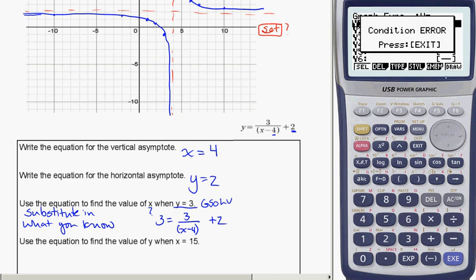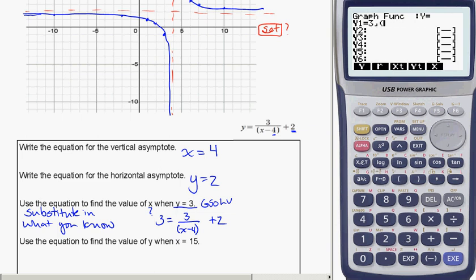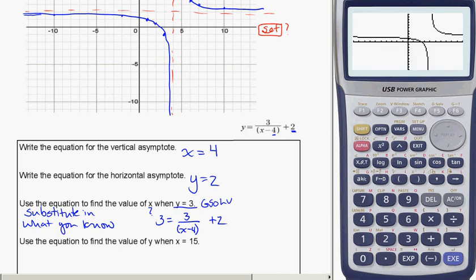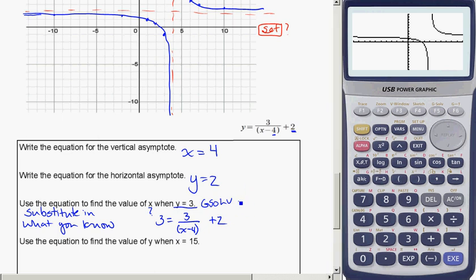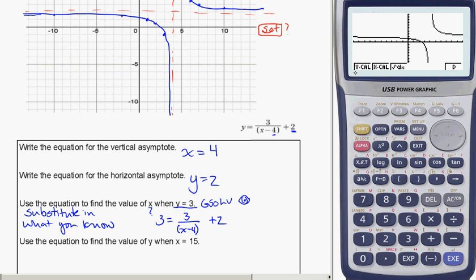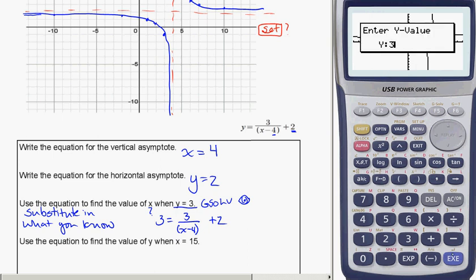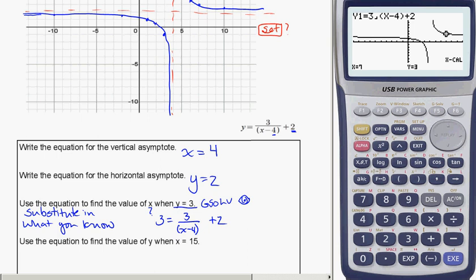So y is equal to 3, so instead of writing y, I'm going to write 3. 3 is equal to 3 divided by bracket x minus 4, bracket plus 2. Feel free to use your algebra to solve that out, or use solver. But to get more familiar with our calculator's abilities, let's go to gsolve. Let's draw that out. Sometimes it'll error when you've entered it in table first. Just type the equation again. Remember a very important thing for gsolve is that you have to be able to see the features you're looking for.